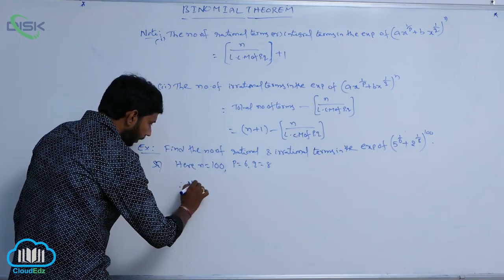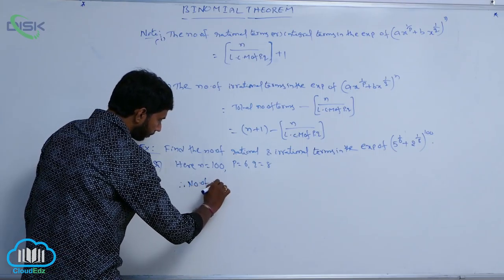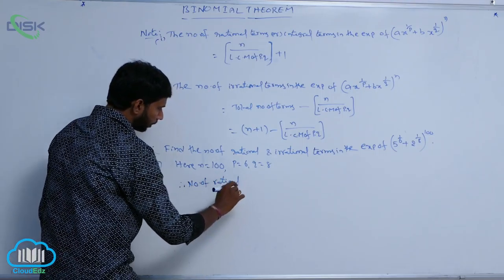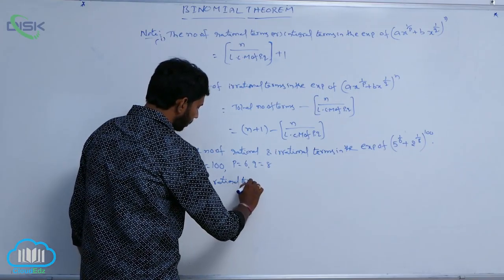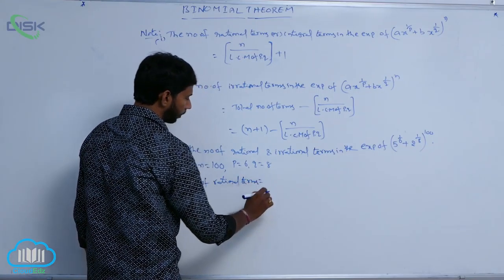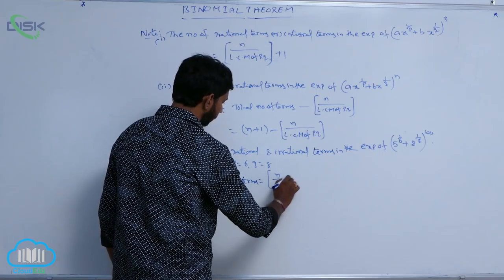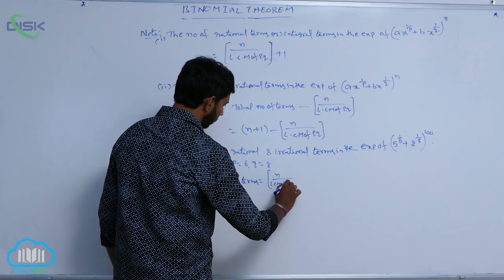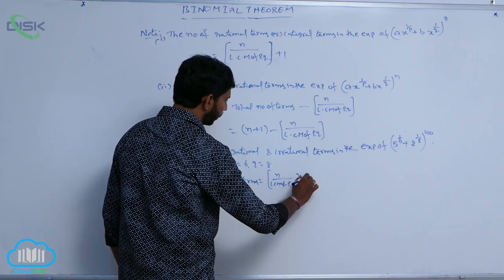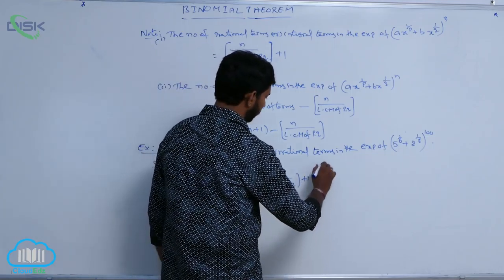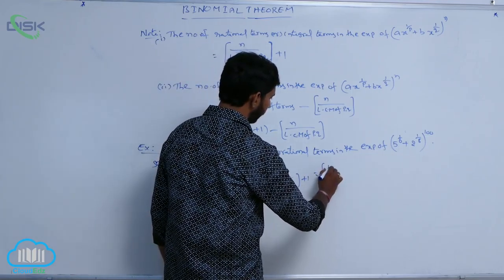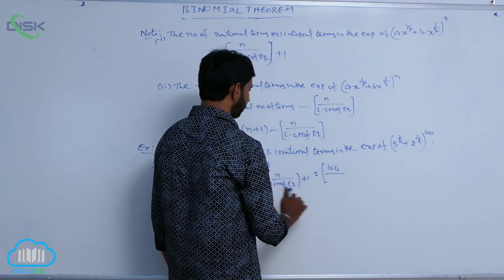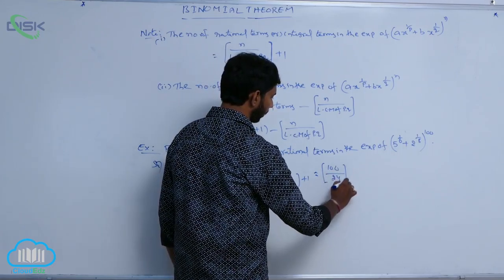Therefore, the number of rational terms is equal to floor of n divided by lcm(p, q), plus 1. That is floor of 100 divided by lcm(6, 8) which is 24, plus 1.